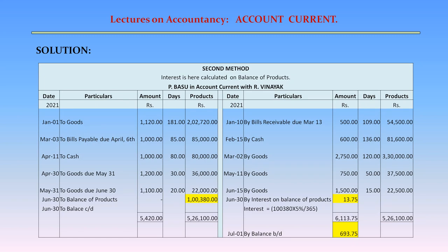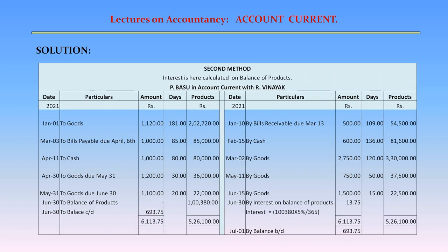Now we calculate interest on the balance of products using the formula: Interest = 1,00,380 × 5% / 365, which comes to approximately Rs. 13.75. When we total up the amount columns, debit side is Rs. 5,420 and credit side, including interest of Rs. 13.75, is Rs. 6,113.75. The difference of excess credit is Rs. 693.75. We transfer this Rs. 693.75 to the debit side to balance the account: June 30 — To balance carried down Rs. 693.75. Total debits and credits both equal Rs. 6,113.75. For the next period: July 1 — By balance brought down Rs. 693.75.